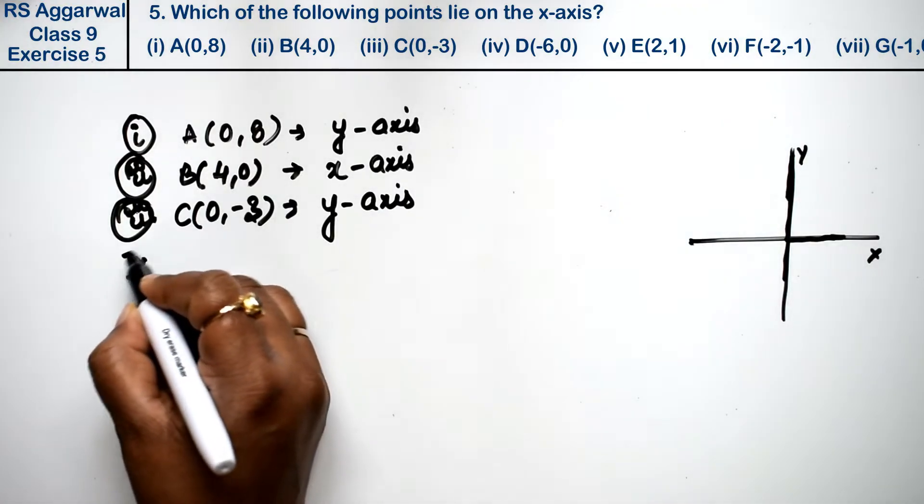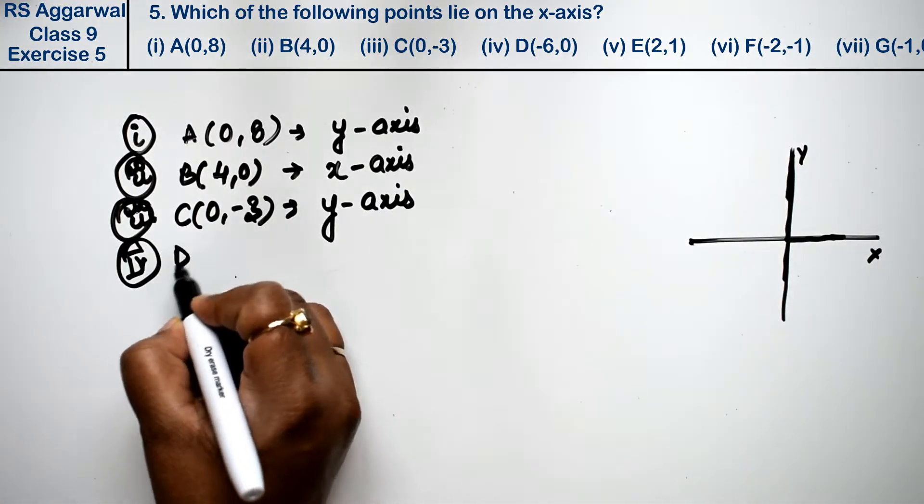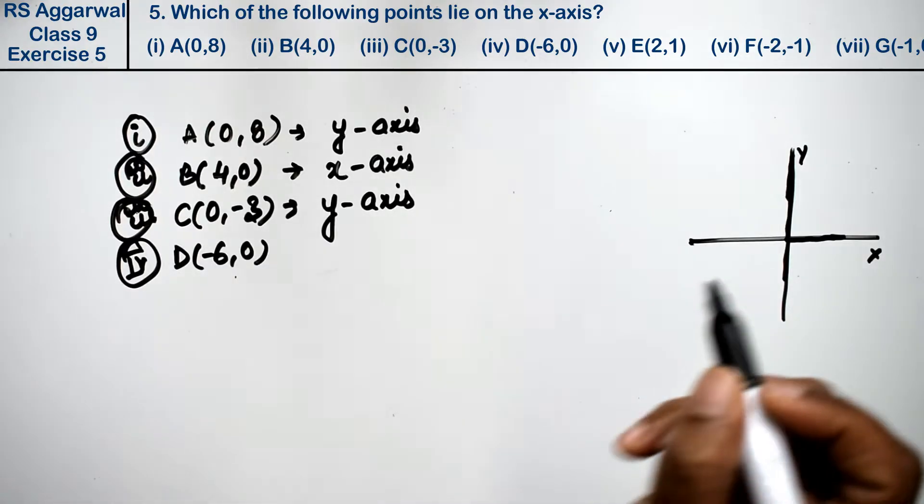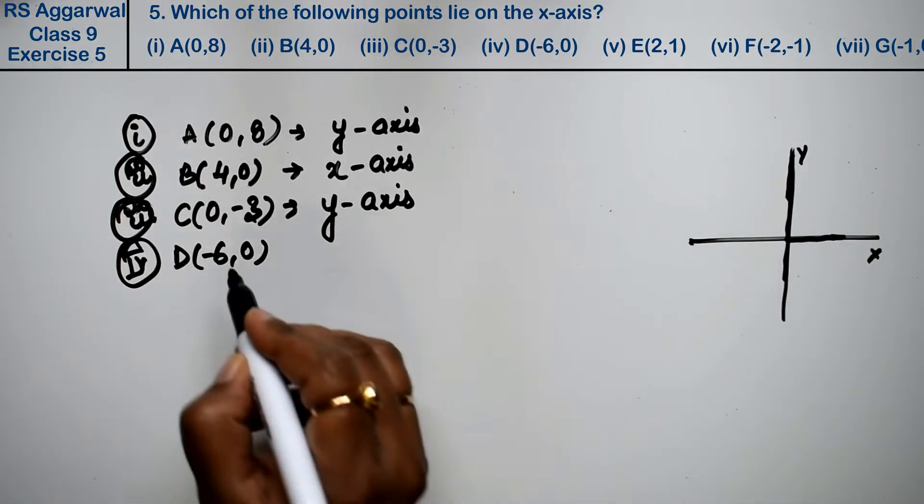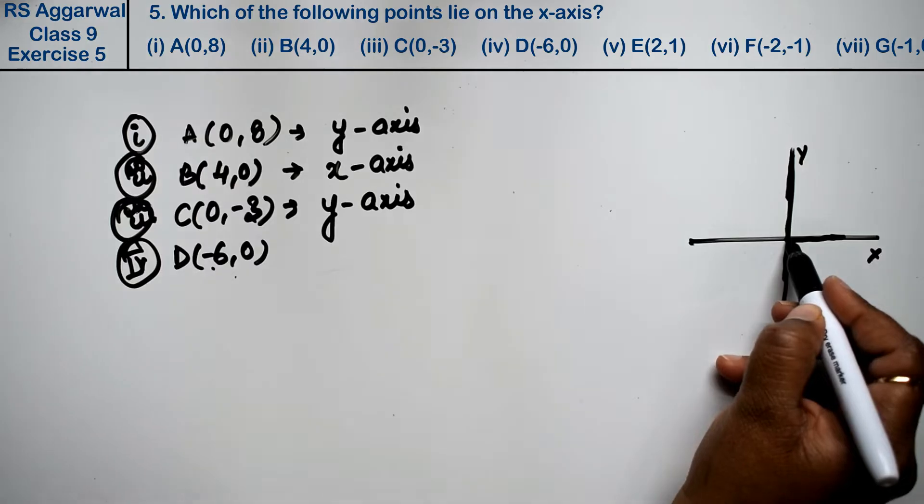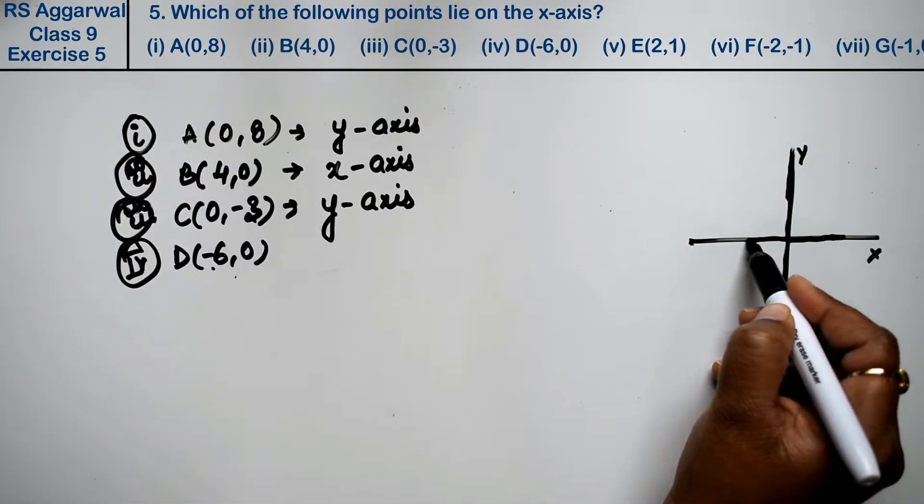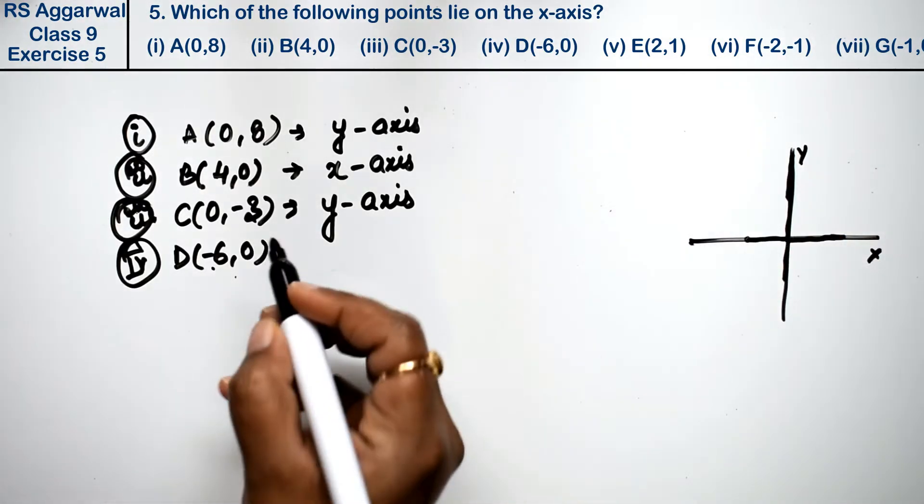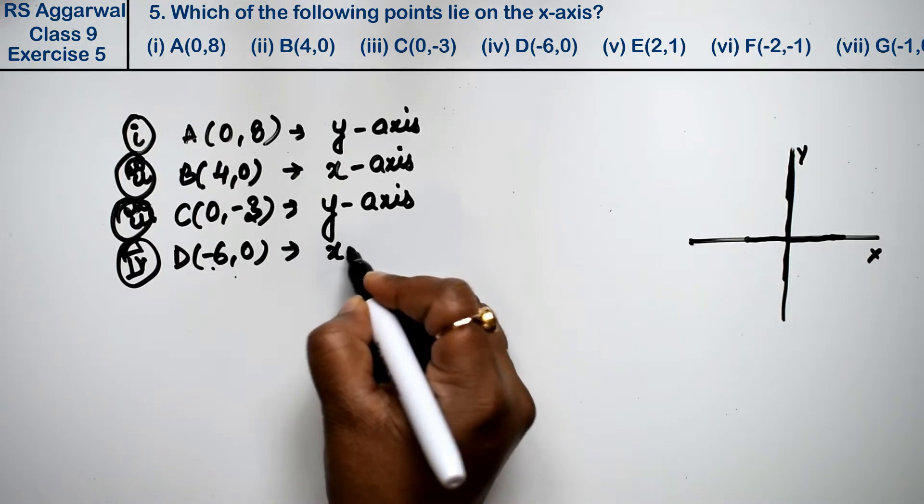Let's do fourth part. Fourth part is D(-6,0). So y is 0. So that means this is on the x-axis.